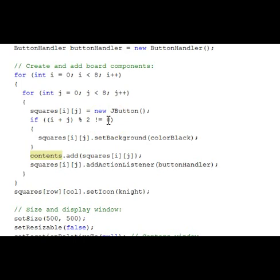And we set the background color to be color black. Then we add our square to the contents pane.